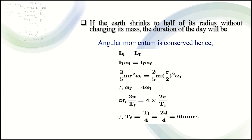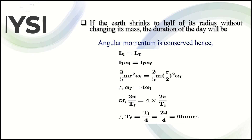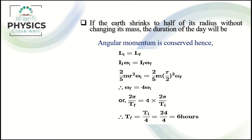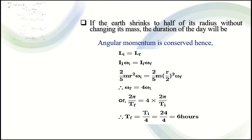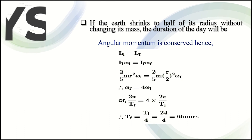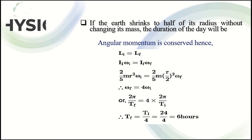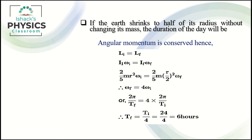Omega is equal to 2π times f, and f equals 1 by T, so omega equals 2π by T. Setting 2π by T_F equal to 4 times 2π by T_i gives T_F equal to T_i divided by 4. That means T_F equals 24 divided by 4, which is 6 hours.